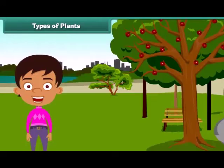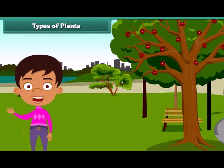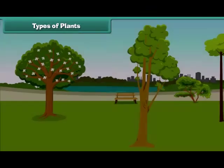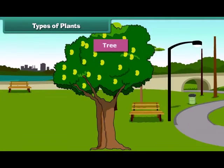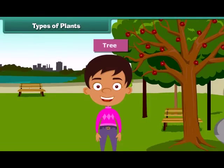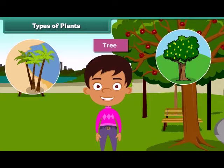Children, we often see different types of plants around us. We find that some plants are tall while some are small. Plants which are very tall and strong are called trees. For example, mango tree, coconut tree, and neem are tall.